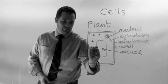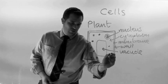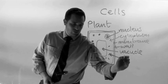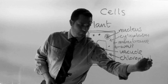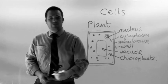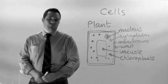In the cytoplasm of a plant cell, you'll find these. These are called chloroplasts. Chloroplasts contain a green chemical called chlorophyll, which is used for photosynthesis.